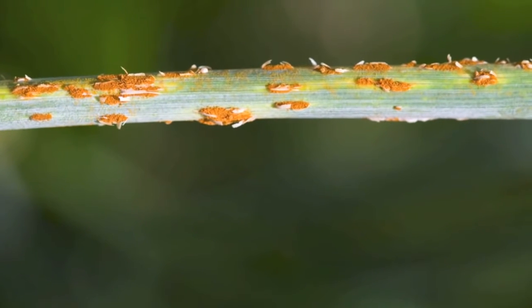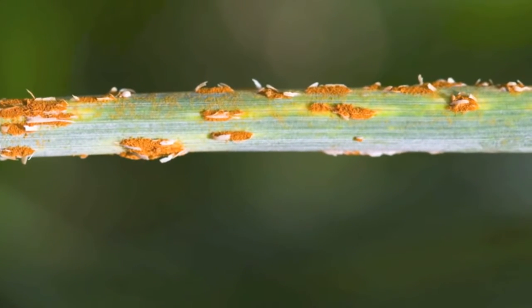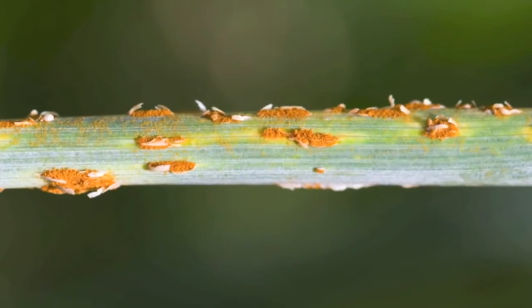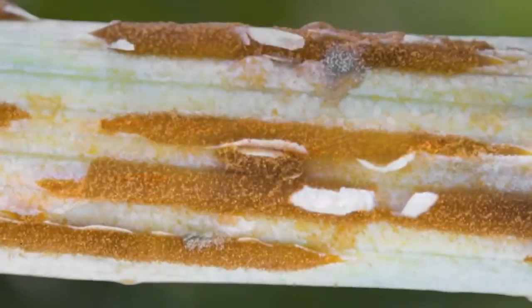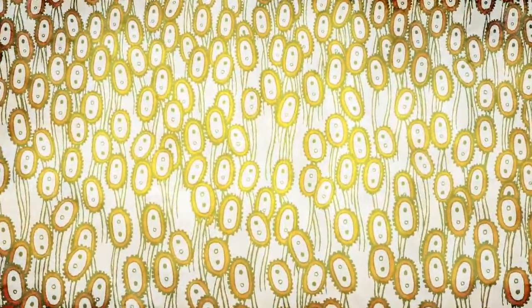Stem rust of wheat is named for the powdery, reddish-brown, rusty-colored blisters or pustules that develop on the stems and leaves of susceptible wheat lines grown under conditions conducive to infection. This telltale reddish-brown powder found on infected wheat plants are spores of the fungus Puccinia graminis, the organism that causes stem rust.